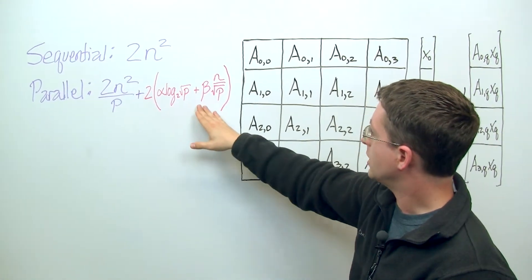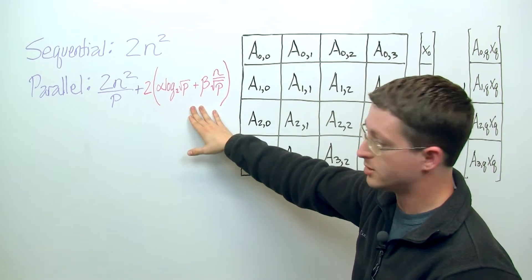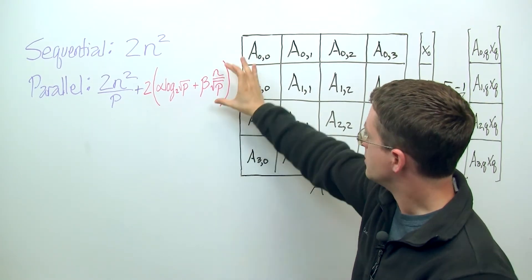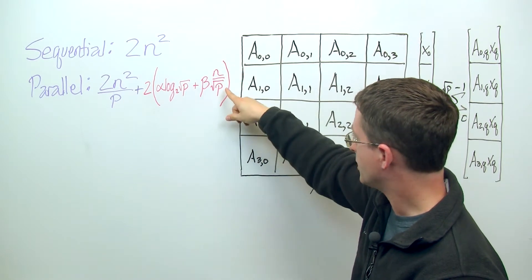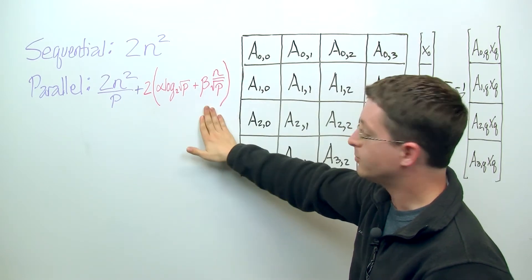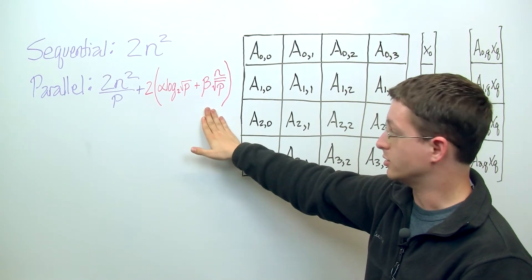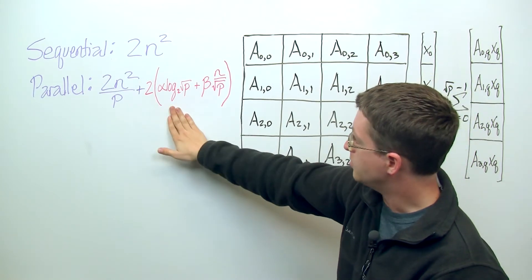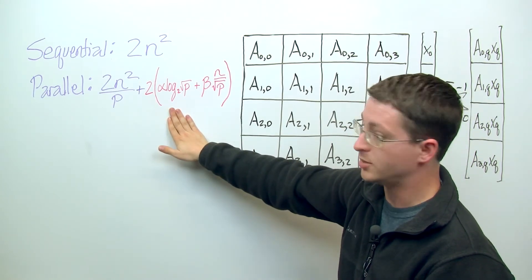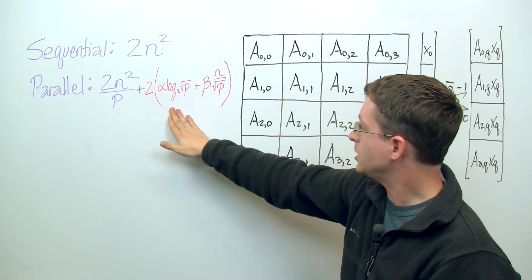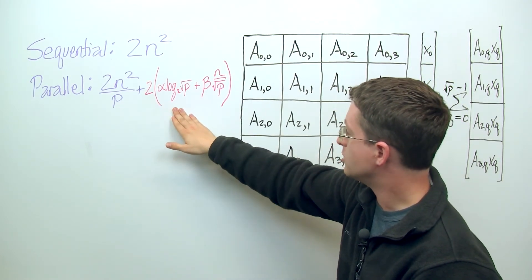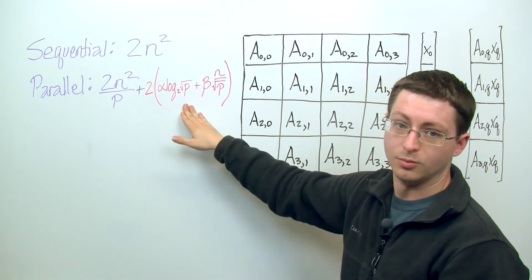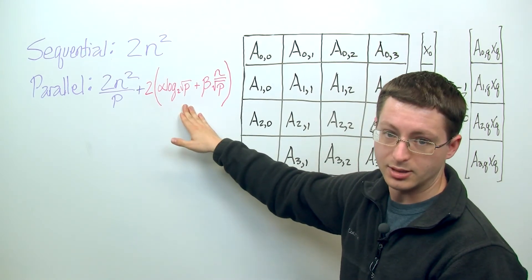Now if we again think of what would happen if p was equal to n-squared, we see that this bandwidth term looks like n over root n-squared. So the bandwidth term is then order of 1 also. So the only thing that would be not order of 1 would actually be the latency term. So if p was equal to n-squared, this would look like 2 times alpha times log 2 of n, which is only logarithmic in the size of the problem.